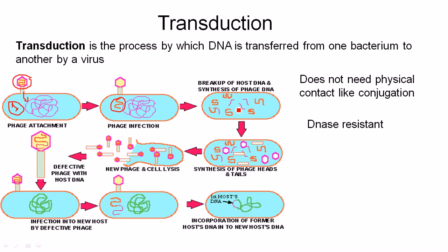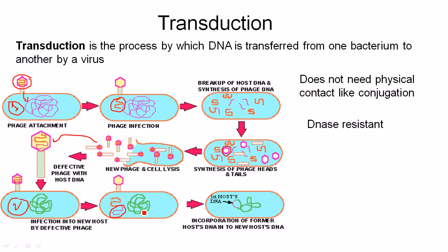When the replicated viral chromosomes are inserted into new viral head particles, some of the bacterial chromosome gets added to the viral chromosome. After lysis of the first bacteria, the virus particle then infects the second bacteria. When this virus infects the second bacteria, it carries the previous bacteria's DNA fragment, which is then incorporated into the second bacterial chromosome.